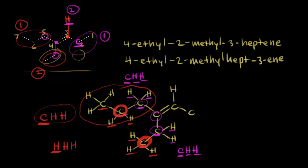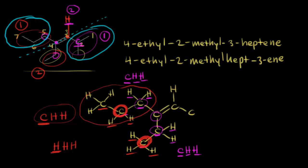We draw in our line and look at which sides our higher priority groups are on. Our two higher priority groups are on opposite sides of the double bond, so we know this is the E configuration. We put E in parentheses in our name. The final name for our compound is (E)-4-ethyl-2-methyl-3-heptene, or equivalently (E)-4-ethyl-2-methyl-hept-3-ene.